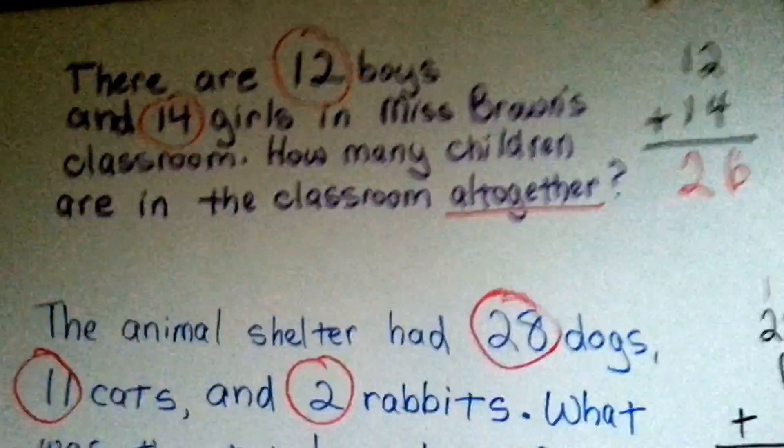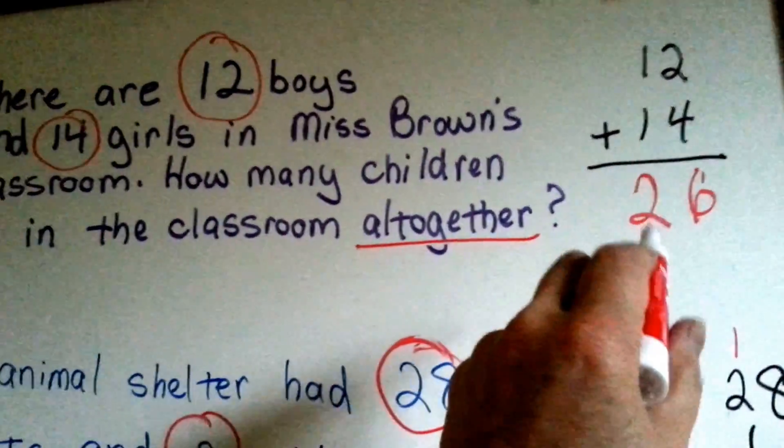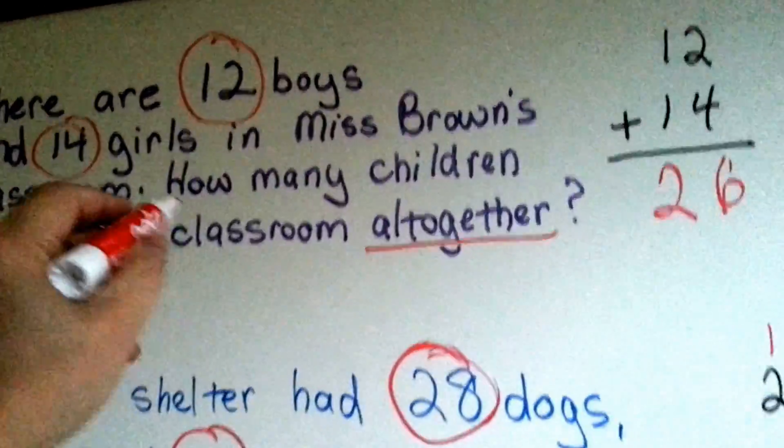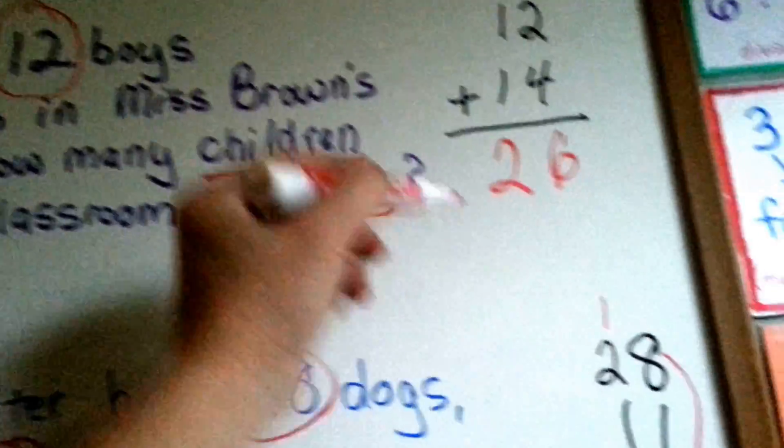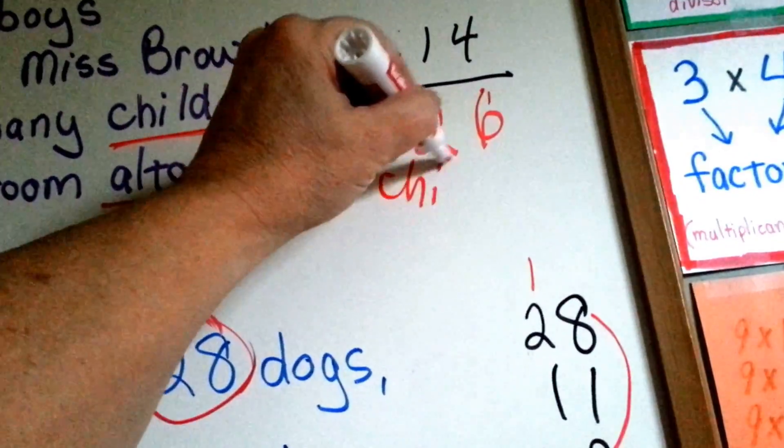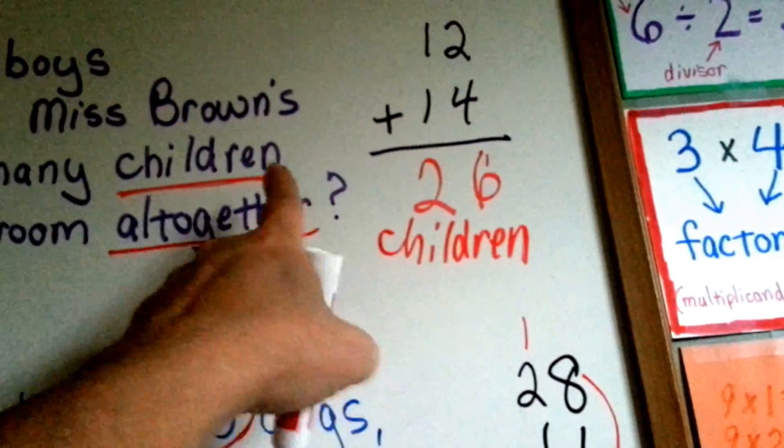It's very important in a word problem that when you have the answer, you don't just write the number. It says, how many children? See that? So your answer really is 26 children. That's the correct answer. You want to put children there.